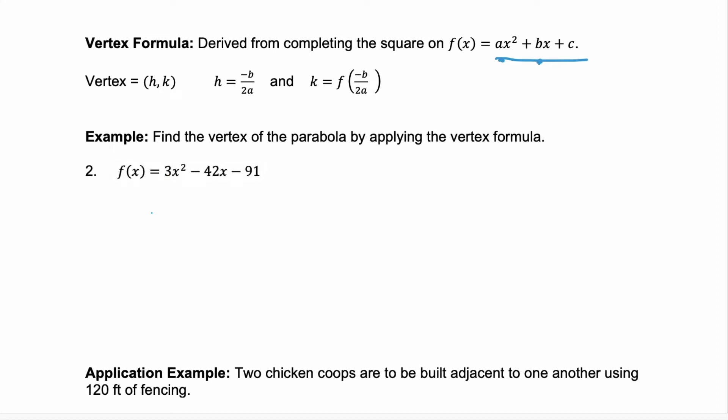So let's find the vertex of a parabola by using that vertex formula. You want to identify your a value and your b value. Here, a is the coefficient in front of your x squared, which is 3. And b is the coefficient in front of your linear term x, which is negative 42. Your h coordinate is equal to negative b, so negative negative 42, divided by 2 times a. So we have 42, divided by 6, where our h value of the vertex is 7.